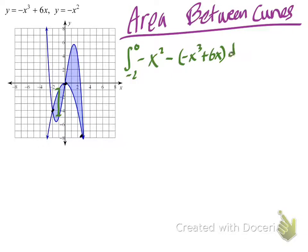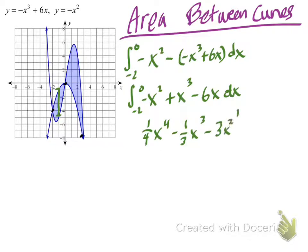That's the height, and the width is dx. Simplifying, I have the integral from -2 to 0 of x³ - x² - 6x dx. Applying the reverse power rule in descending order, that's ¼x⁴ - ⅓x³ - 3x² evaluated from -2 to 0. Let me double check that. Looks good.